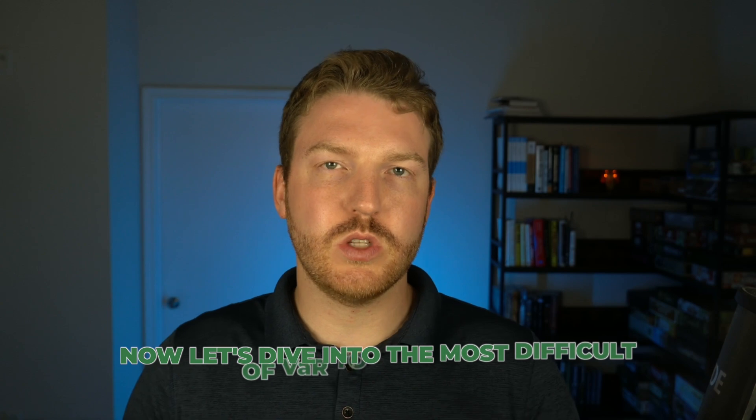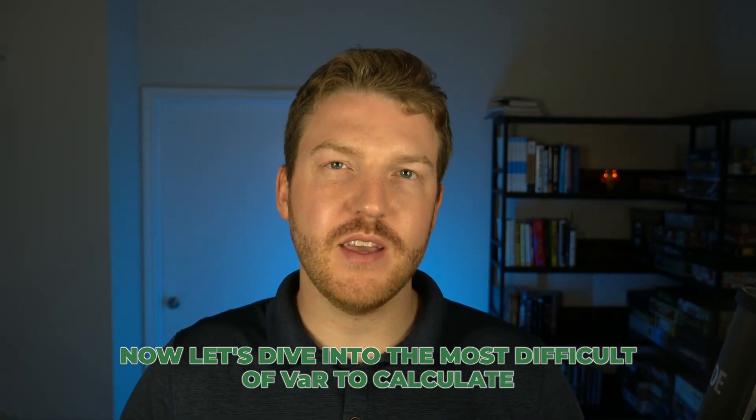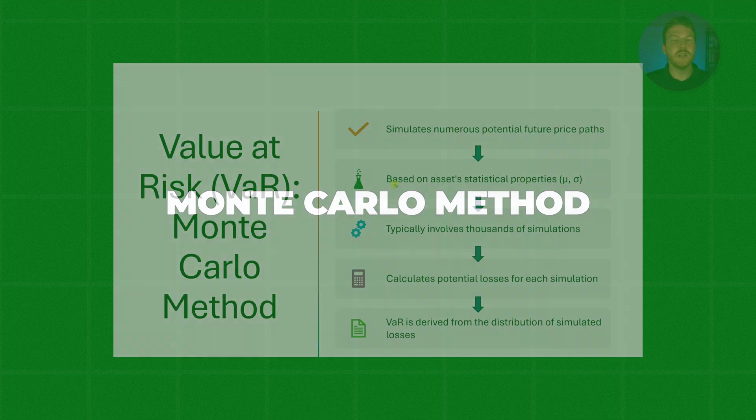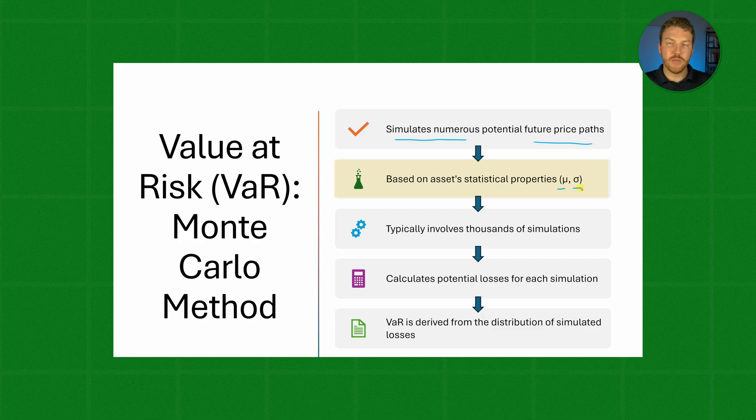Now let's dive into what's probably the most difficult method of VaR to calculate, the Monte Carlo method. Basically we're going to simulate numerous potential future price paths. These paths are going to be based on the mean and the standard deviation that we talked about on the parametric method part of this video.